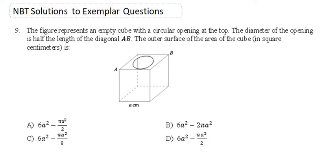So it says the figure represents an empty cube with a circular opening at the top. The diameter of the opening is half the length of the diagonal AB. The diagonal of the opening is half the length of the diagonal AB. The outer surface of the area of the cube in centimeters is how much.